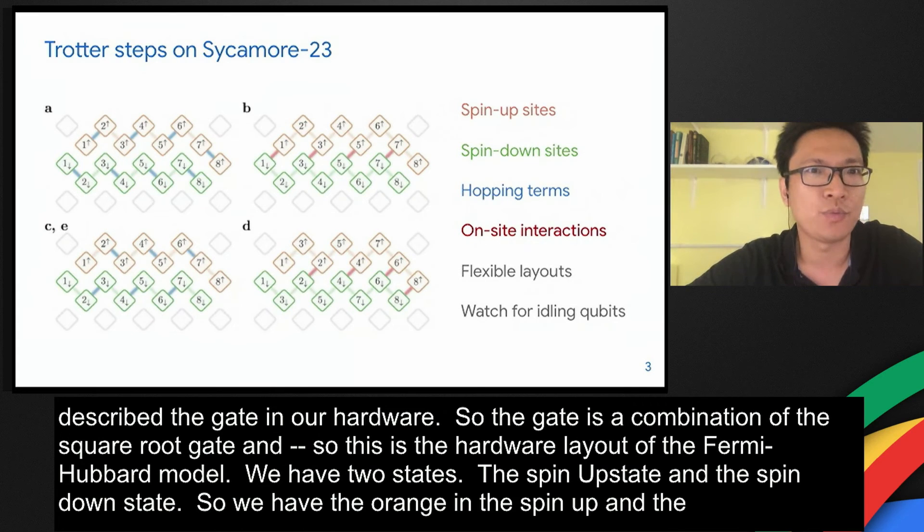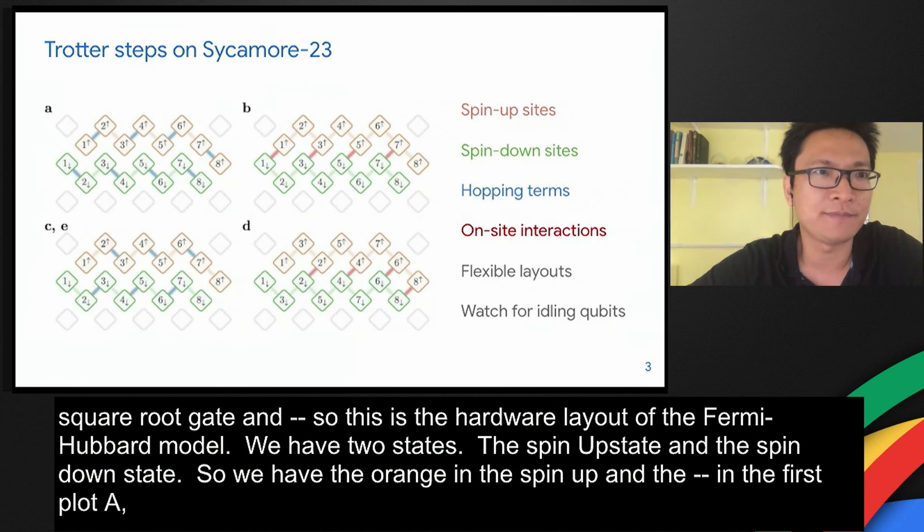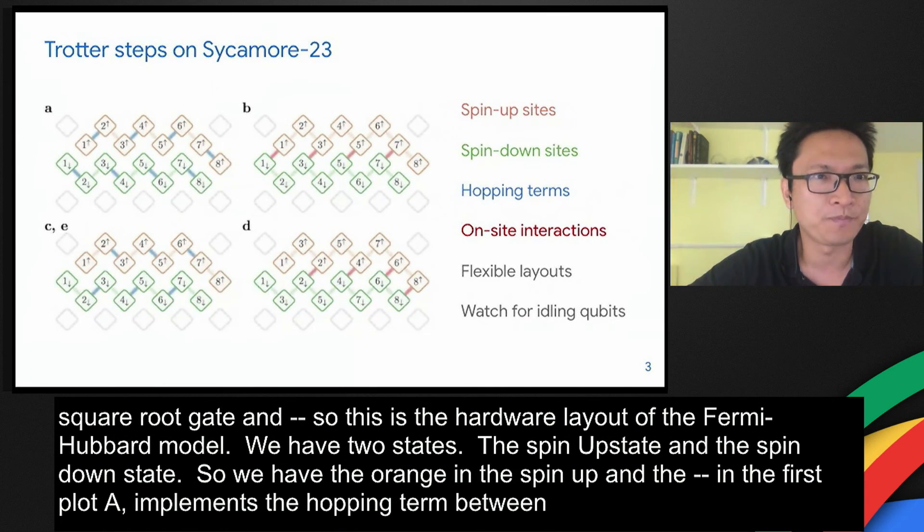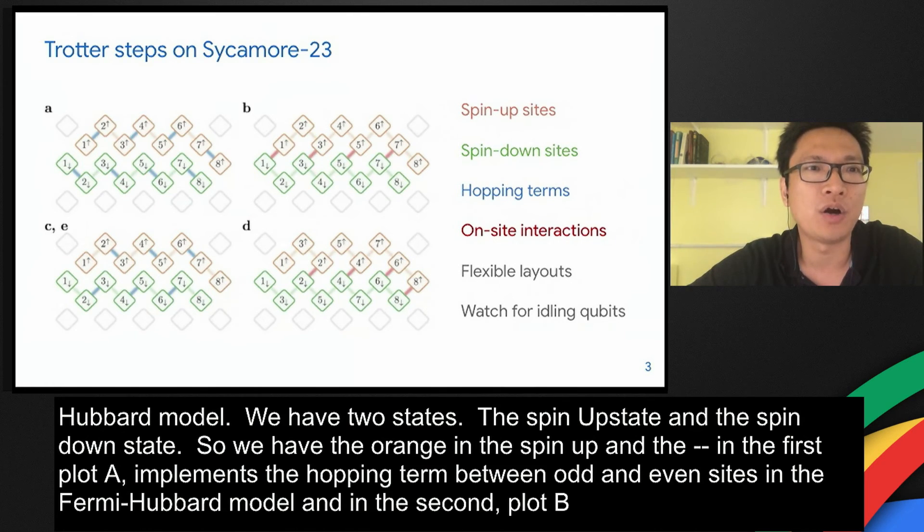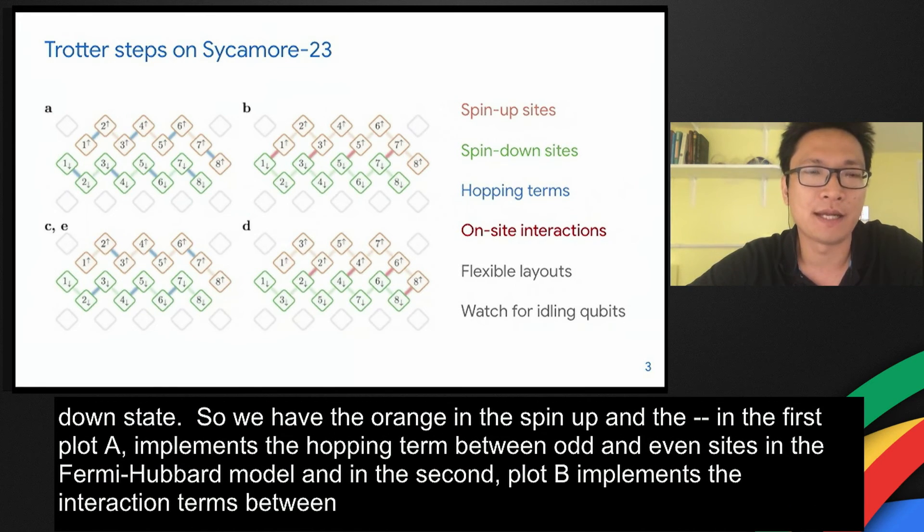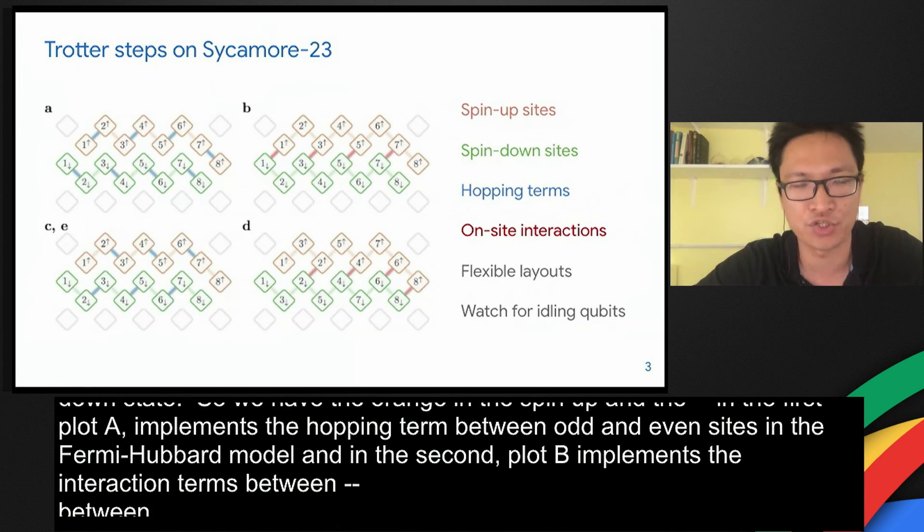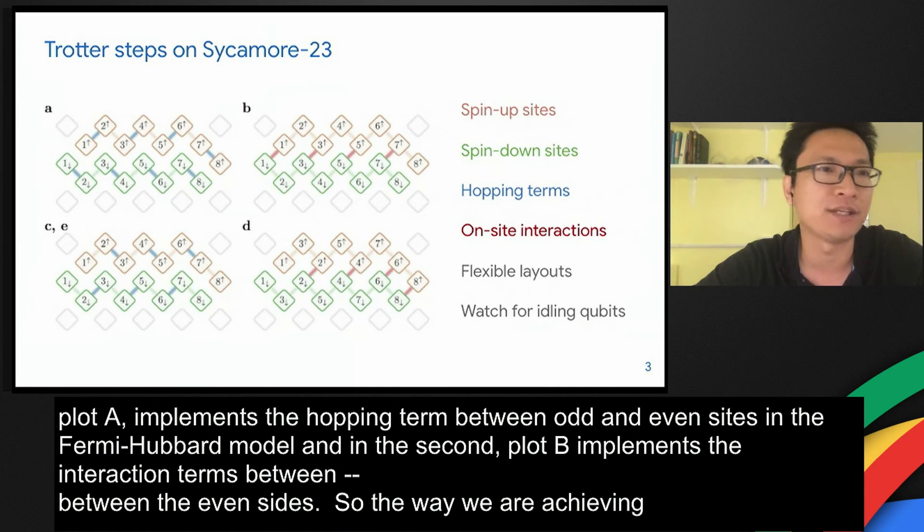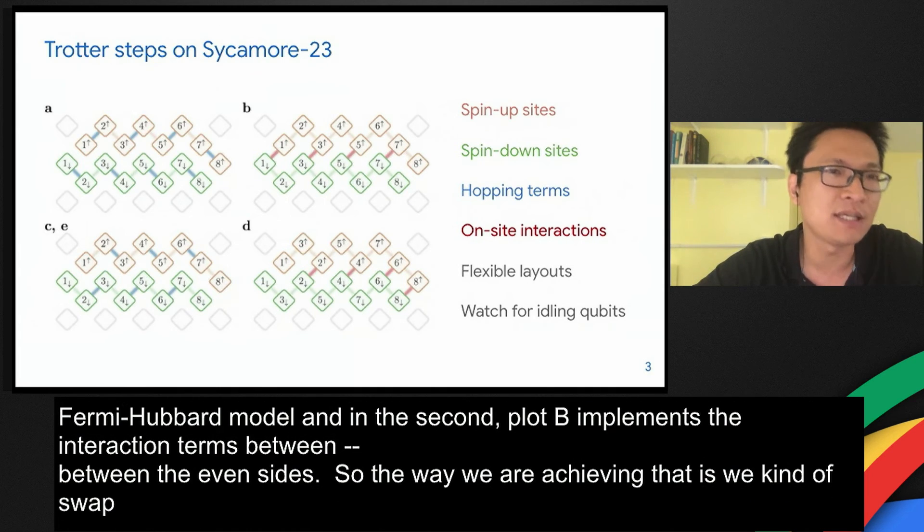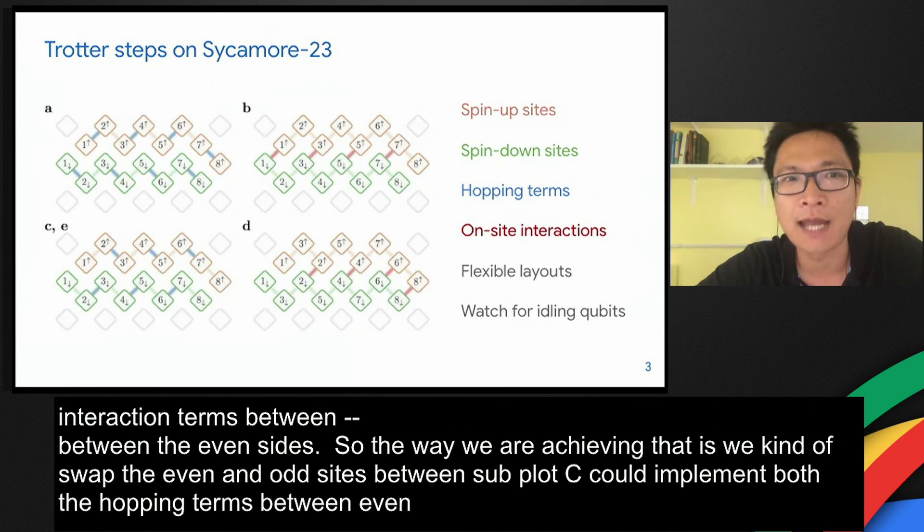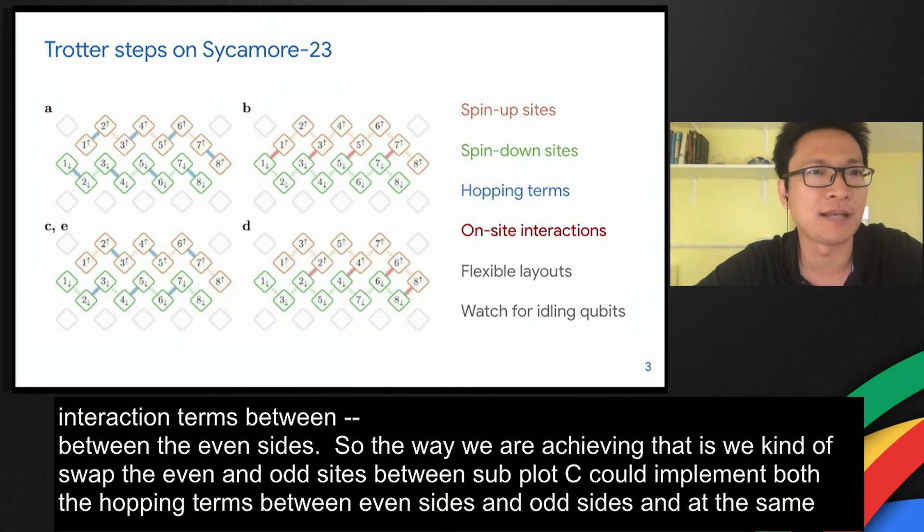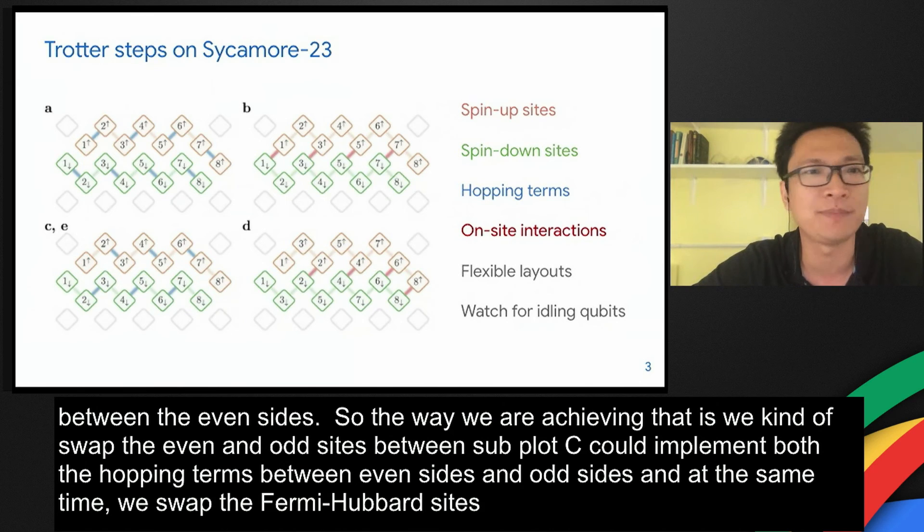In the first plot A, we implement the hopping term between odd and even sites in the Fermi-Hubbard model. In the second subplot B, we implement the interaction terms between odd sites. This is problematic because of the zigzag layout we choose. It is not possible to implement the interaction between the other even sites. The way we achieve that is we swap these even and odd sites. In subplot C, we implement both the hopping terms between even sites and odd sites. At the same time, we swap these fermionic sites so that in the last subplot, we can implement the interaction terms between all the sites.